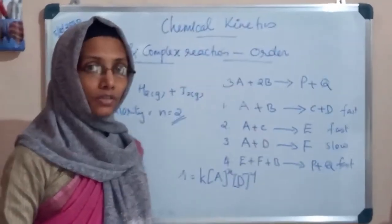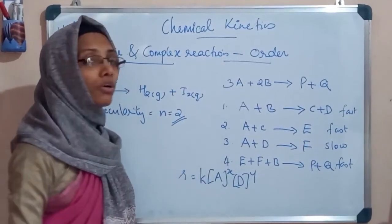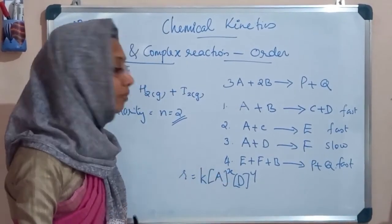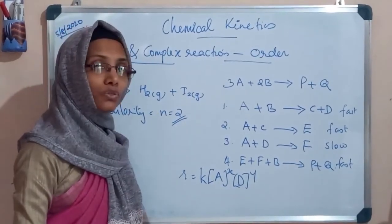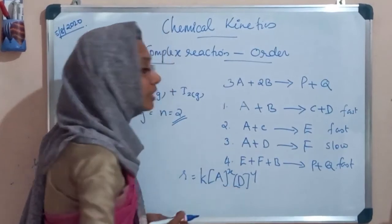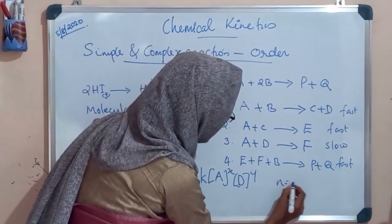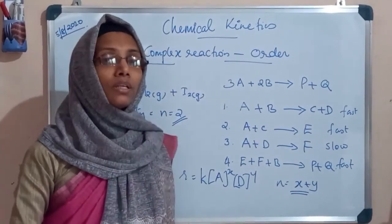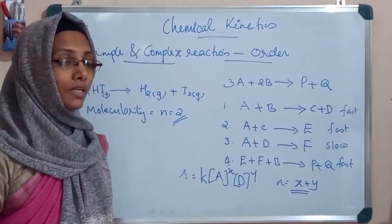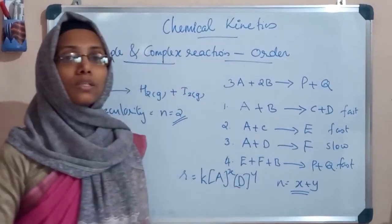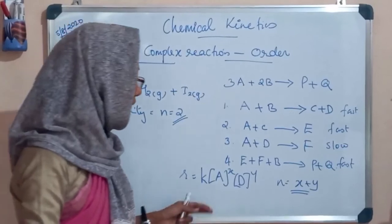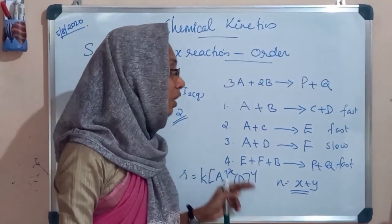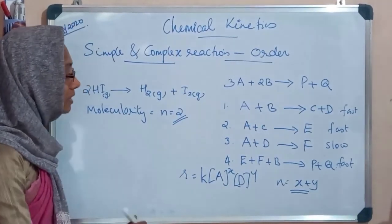The order of the overall complex reaction is the order of the slowest step, where n = x + y. For a complex reaction, each elementary step has its own molecularity, but the order of the overall reaction is the order of the slowest step. The rate of the overall reaction is also the rate of the slowest step — that is, the slowest step is the rate-determining step of a complex reaction.